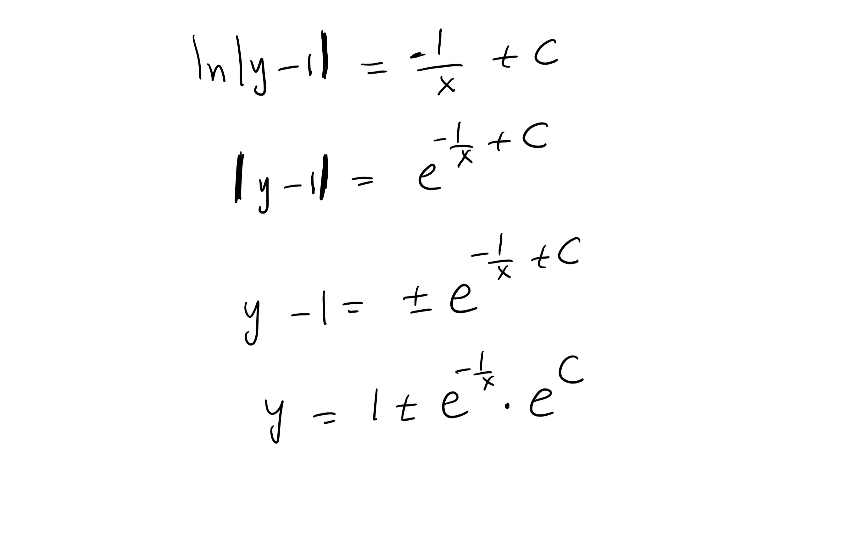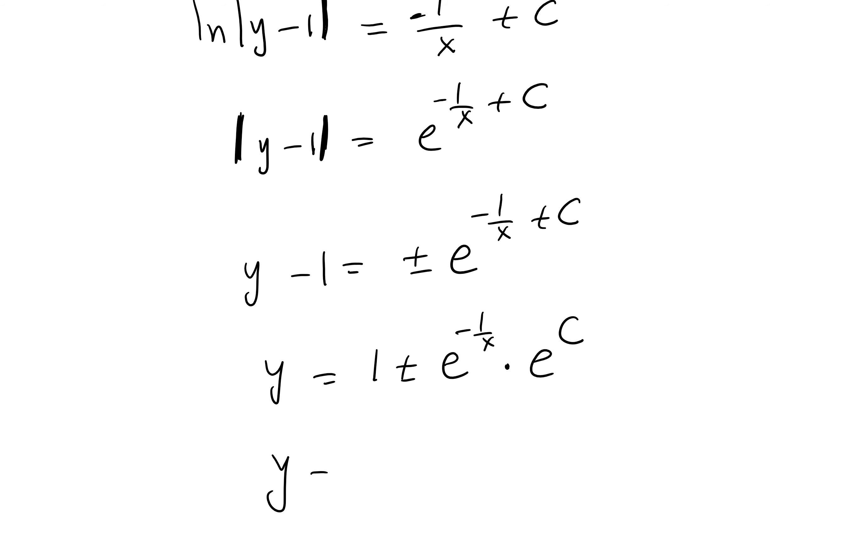And then what you can do, you know the e^c is constant. Plus or minus they write just plus k times e^(-1/x). So the k is plus or minus e^c. Any questions about this? You just write 1 plus c times e^(-1/x)? Yeah, but because you already use the c, try to use a different letter. Okay.